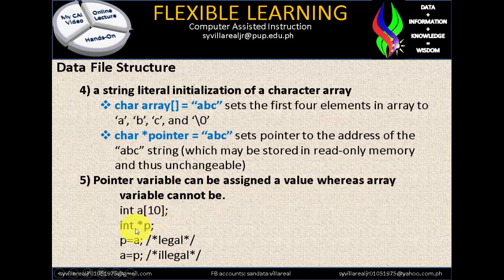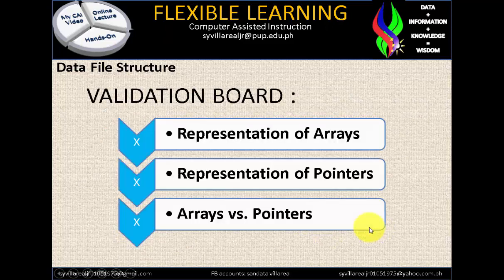Pointer variable can be assigned a value whereas an array variable cannot. For example: int A[10] is an array, int *P is a pointer. P = A is valid, but A = P is not, because we cannot transfer the content of the pointer since it has its own memory allocation. This covers representation of arrays, representation of pointers, and arrays versus pointers.